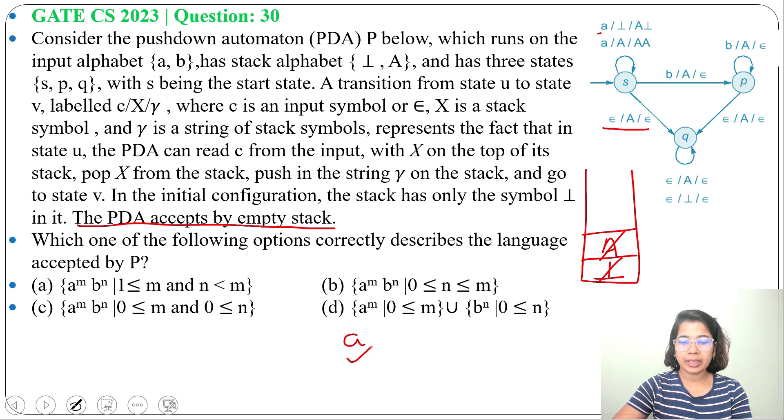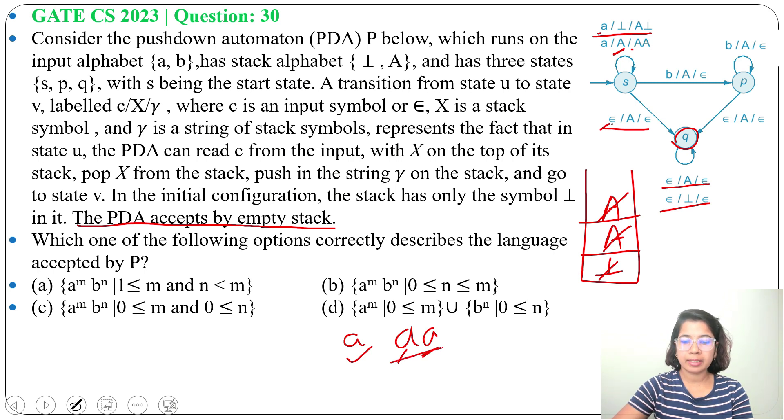Now check if it accepts two As. For first A, it will push A onto stack. For second A, when top of the stack symbol is A, it will push A above it. Now for epsilon, it will pop one A. Then it reaches Q. There it will pop another A. Again it will pop the tau symbol. Now stack is empty, so it accepts A A.